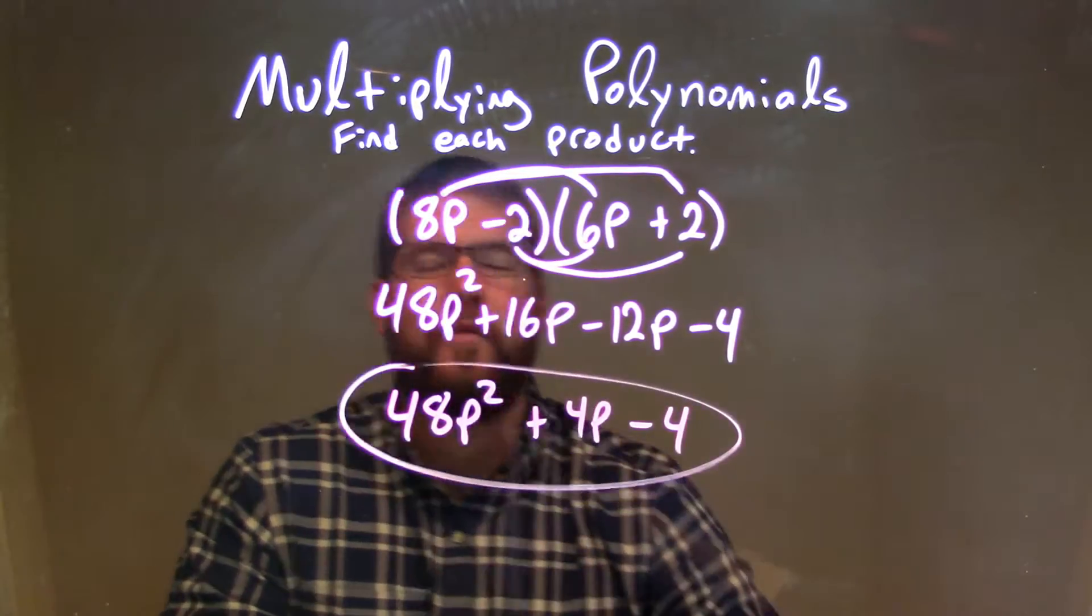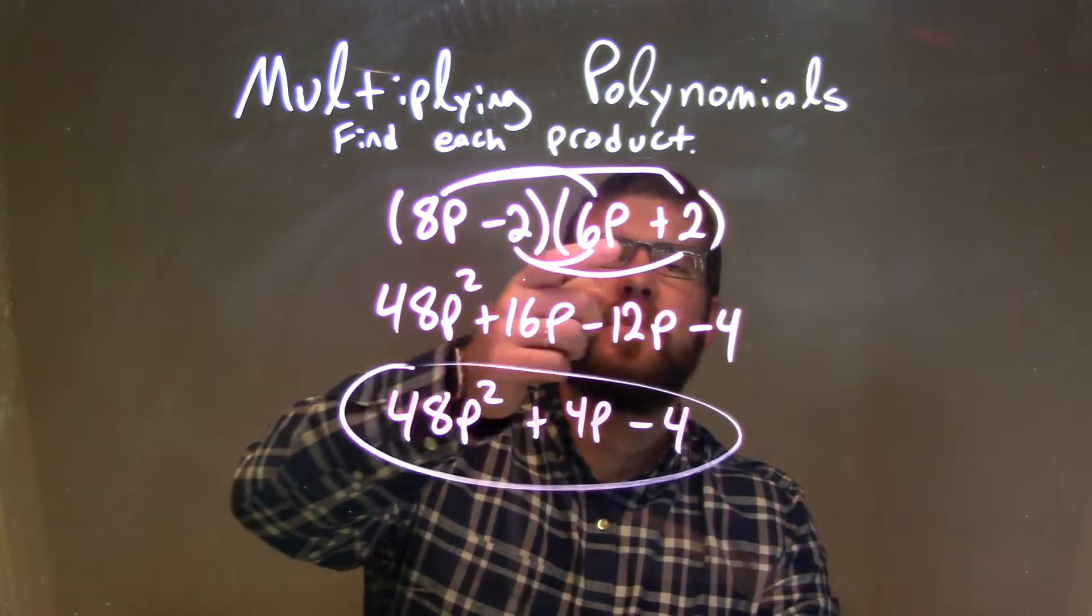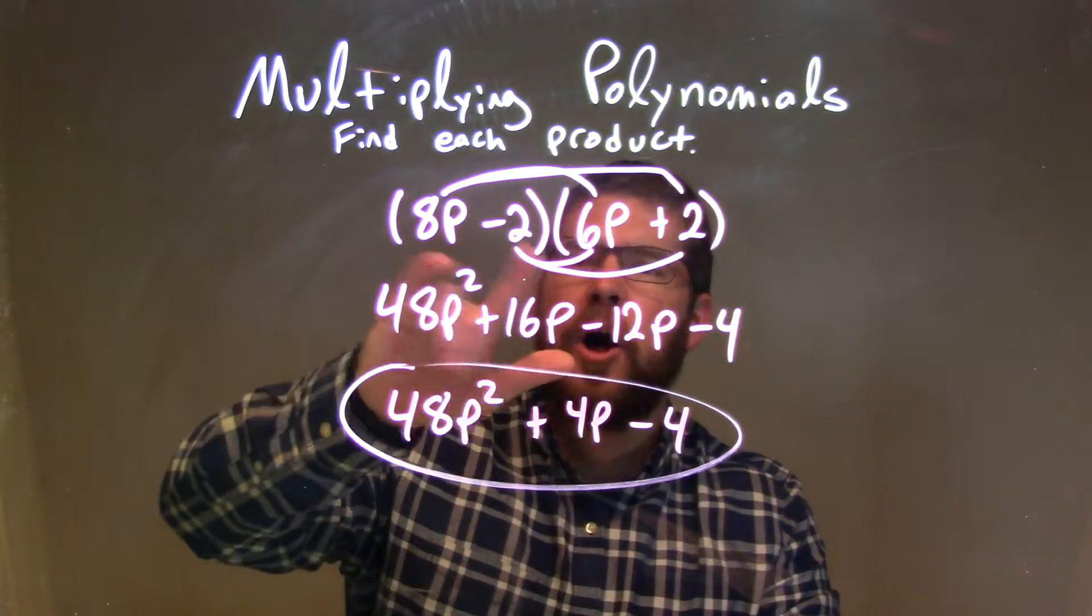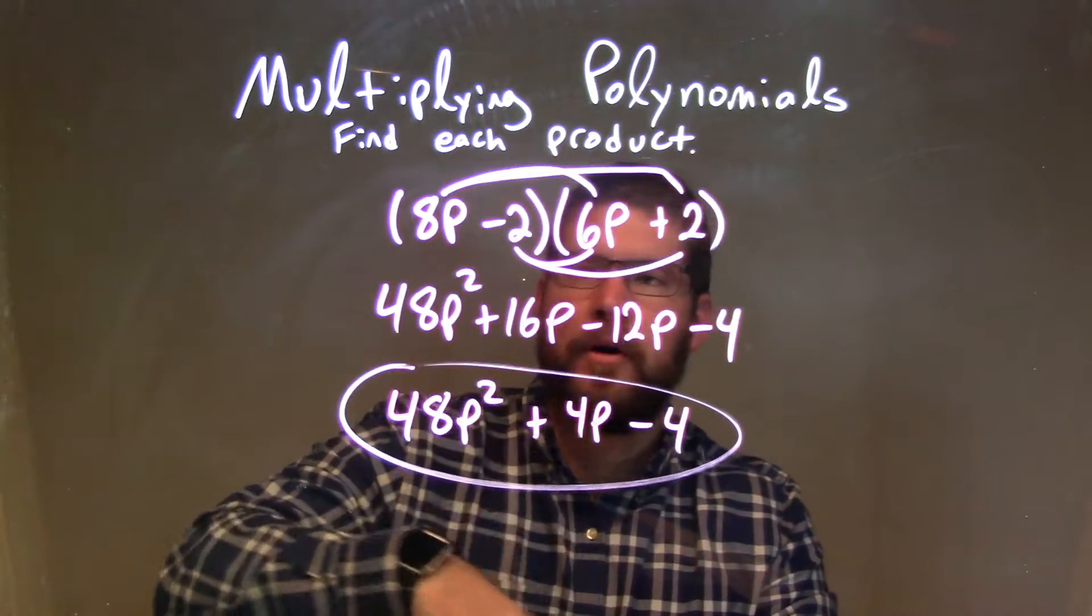And there we go, our final answer. So let's recap. We're given 8p minus 2 times 6p plus 2. I multiplied all parts of my first parenthesis times all parts of my second parenthesis. And I drew my arcs to make sure I got to all parts.